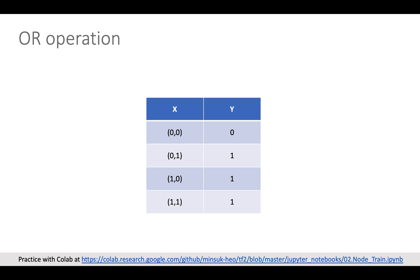In this video, we will train a node which can answer OR operation. OR operation is very simple as you can see from this table. When the input is 0, 0, the answer is 0, but the other input supposed to be the 1 here.